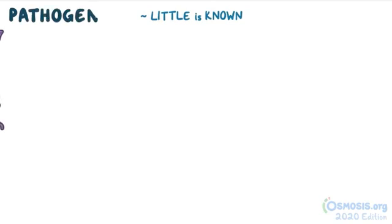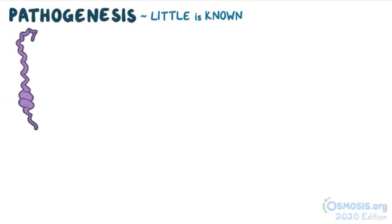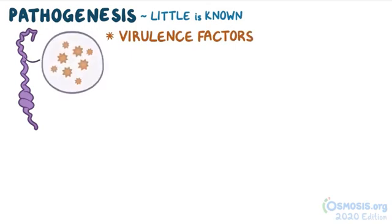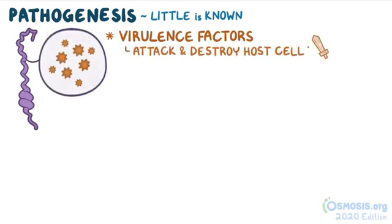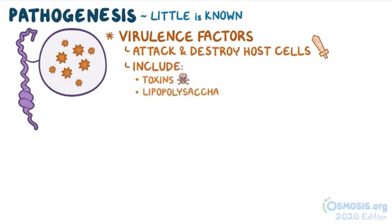Little is known about the pathogenesis of this bacterium, but we do know that it possesses a number of virulence factors, which are like a set of weaponry that help it attack and destroy the host cells. These include toxins and some immunogenic molecules like lipopolysaccharide, or LPS, that triggers an immune response, causing inflammation.